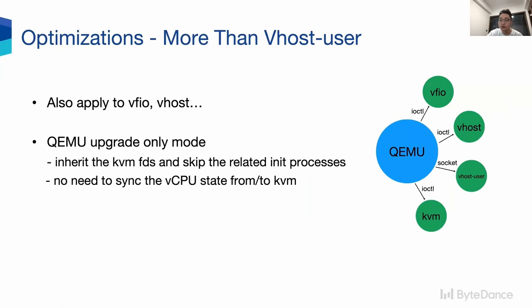Vhost user is one important case, but our optimizations can also be applied to VirtIO, vhost, and so on, in a similar manner. And even for KVM, we can add a mode named Cumulative Upgrade Event, in which we inherit the KVM FDs and skip the related init processes in the new KVM. Thus, there is no need to sync the vCPU state from the old KVM, transfer it, and put it back to the new KVM. By this, we can make the KVM-only Live Upgrade more lightweight.